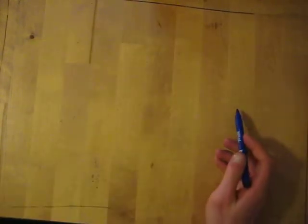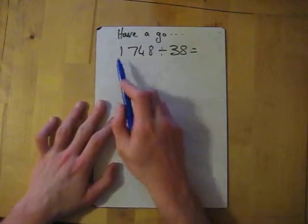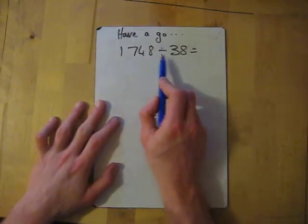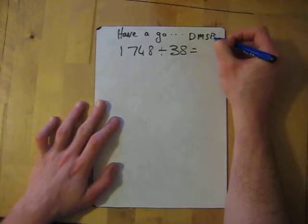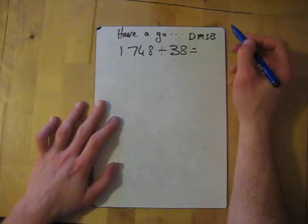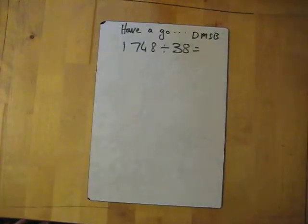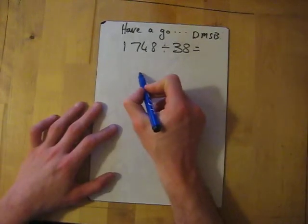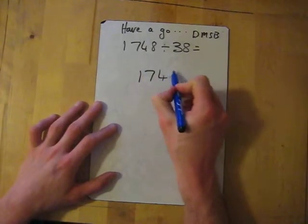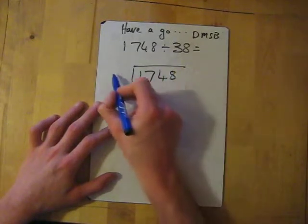Okay, do one more. You can have a little go at this one. We've got 174.8 divided by 38. Remember your Does McDonald's Sell Burgers - Divide, Multiply, Subtract, Bring down. I'm going to go through it in three seconds if you want to pause it now. Three, two, one. Okay, so 1748 divided by 38.